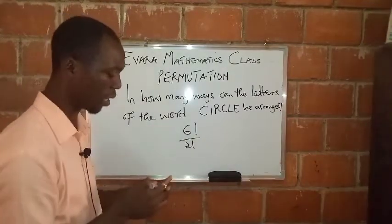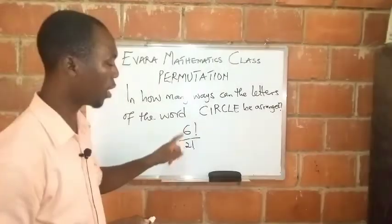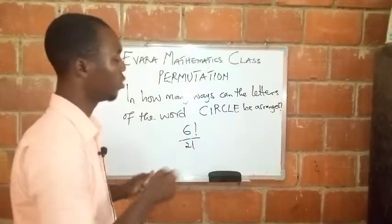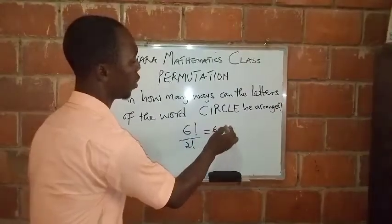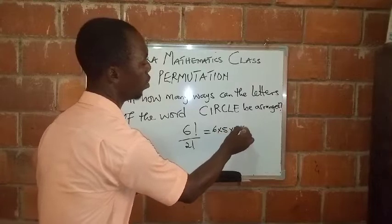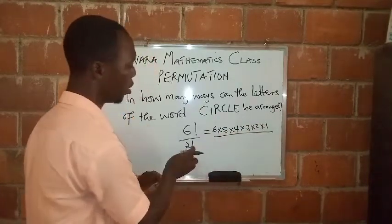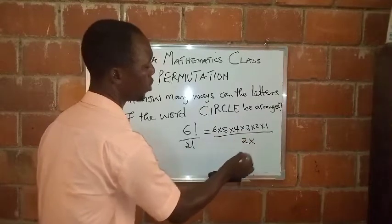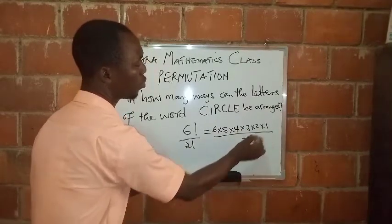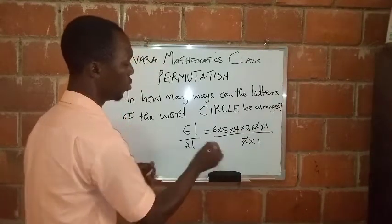So six factorial means six times five times four times three times two times one, and two factorial means two times one. So these two divides these two.